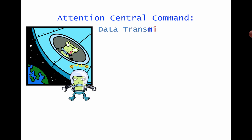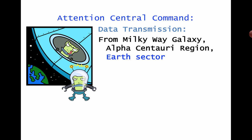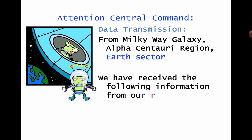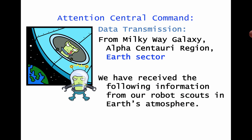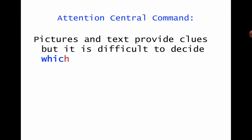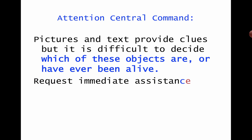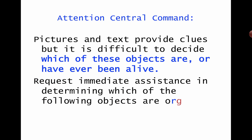So this is our perspective: we are aliens. Attention Central Command — data transmission from Milky Way Galaxy, Alpha Centauri region, Earth sector. We have received the following information from our robot scouts in Earth's atmosphere. Pictures and text provide clues, but it is difficult to decide which of these objects are or have ever been alive. Request immediate assistance in determining which of the following objects are organisms that live on Earth. Over.